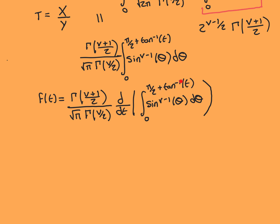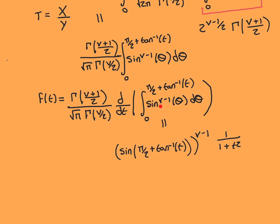The first fundamental theorem of calculus would be really simple if we just had a t up here in the upper limit, because then we'd just get the integrand evaluated at t. But we haven't got just t — we've got a function of t up here. So by the chain rule, we get the integrand evaluated at this function of t, times the derivative of this function of t. The integrand is sin^(ν−1), evaluated at π/2 + arctan(t). The derivative of the upper limit: π/2 is a constant so its derivative is 0, and the derivative of arctan(t) is 1/(1 + t²). This derivative is valid for all t values, positive or negative.